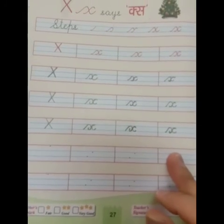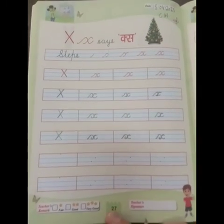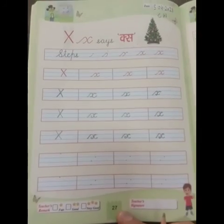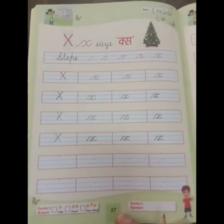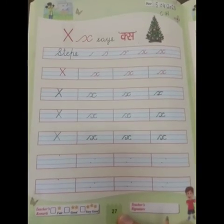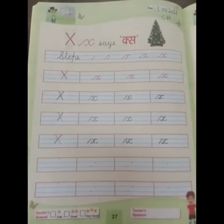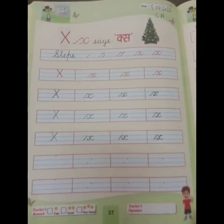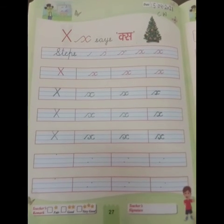So you have to complete this full page, page number 27 in your LKG workbook, LKG English workbook. And if you don't have this workbook you can use four lines notebook. Bye bye. Happy learning. Have a nice day.